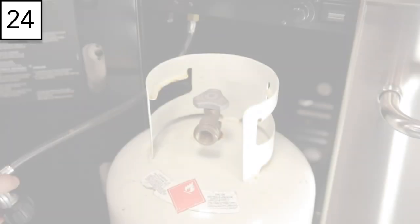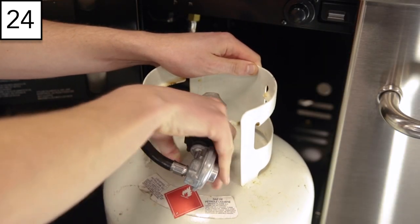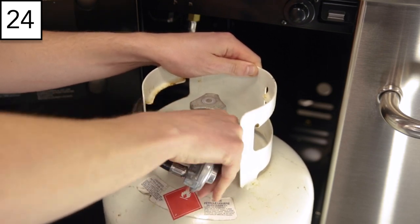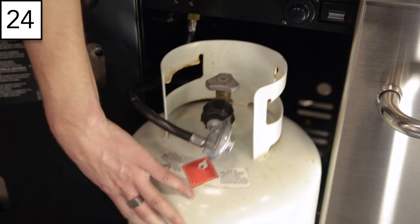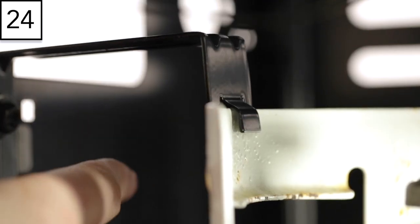Step 24: Attach the hose and regulator with the tank valve facing the front of the cabinet, and secure using the tank bracket assembly.